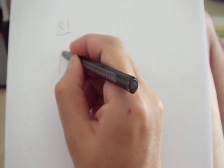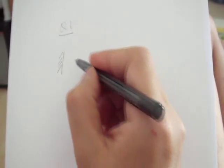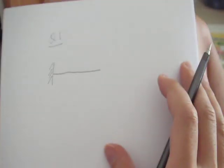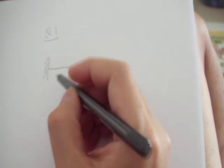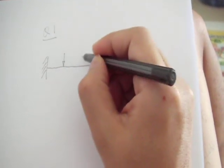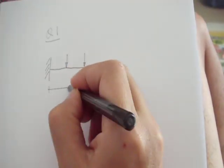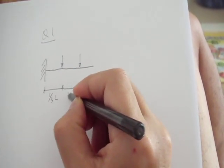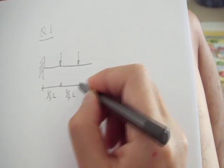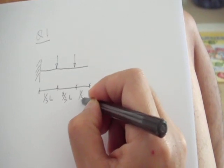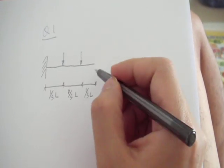On question one, you are given a cantilever beam with a fixed end at the left end, and then you have two concentrated loads at about one third of the span length and two thirds of the span length. And then at the right end it's completely free.